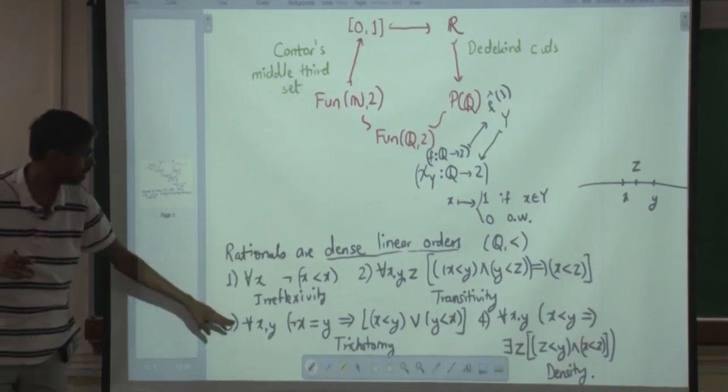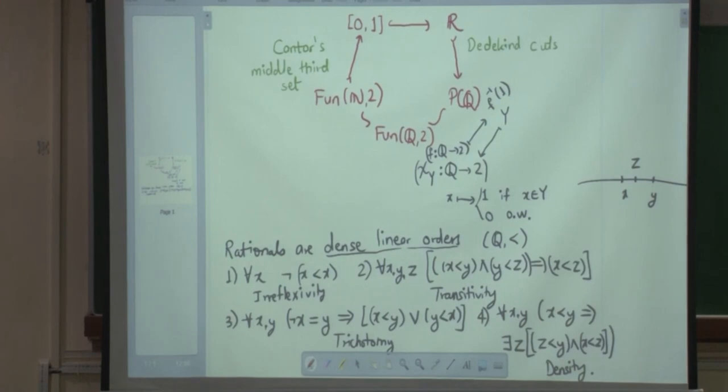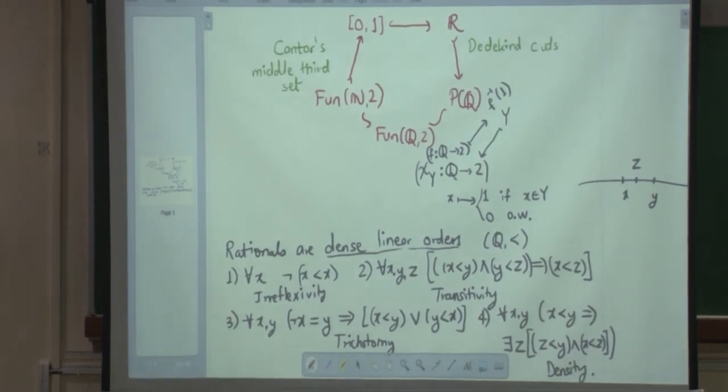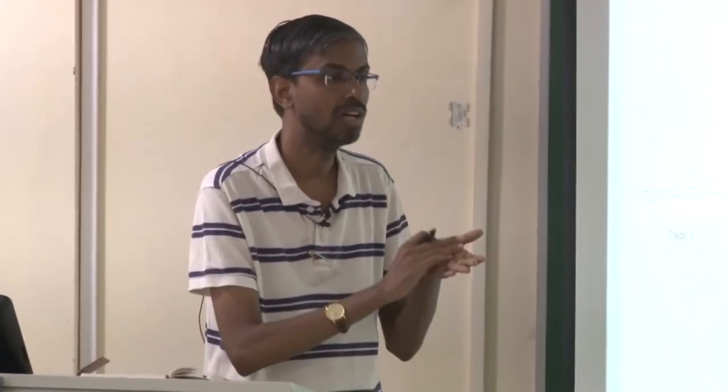Any set equipped with a binary relation satisfying the first three properties is a strict linear order. If it also satisfies density, it is a strict dense linear order. Density is going to play a very important role. Real numbers are actually completions of rational numbers — completions in the sense that they fill up gaps.